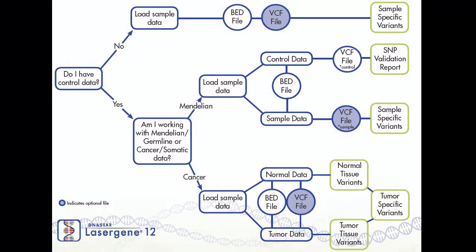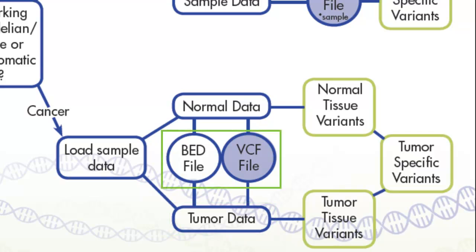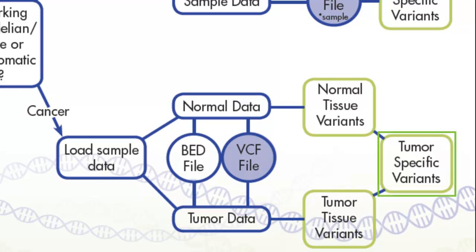Finally, we offer workflows for cancer or somatic gene panel assembly. In this case, you would assemble data from both normal samples and tumor samples. In conjunction with VCF and BED or manifest files, you can identify both normal tissue variants as well as tumor tissue variants. By then subtracting the normal tissue variants from the tumor tissue variants, you can ultimately identify tumor-specific variants.